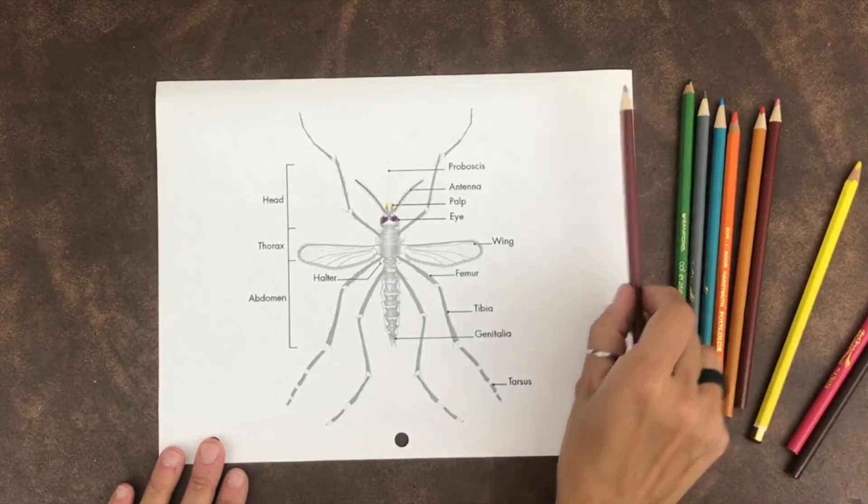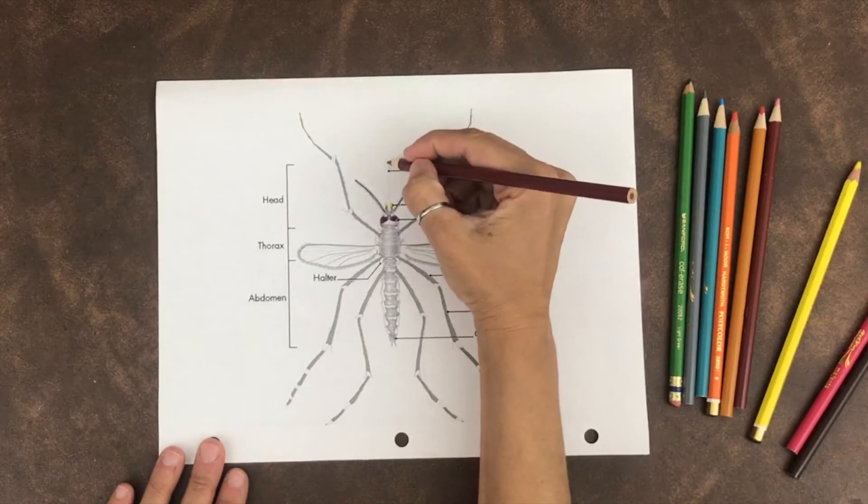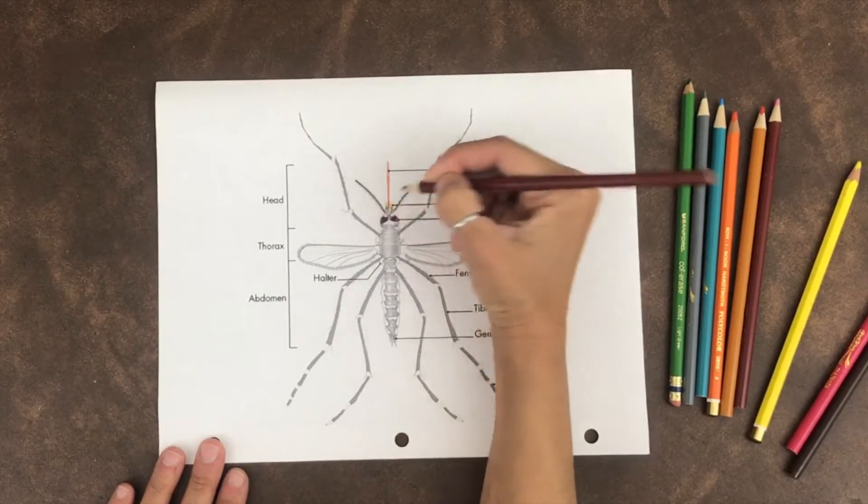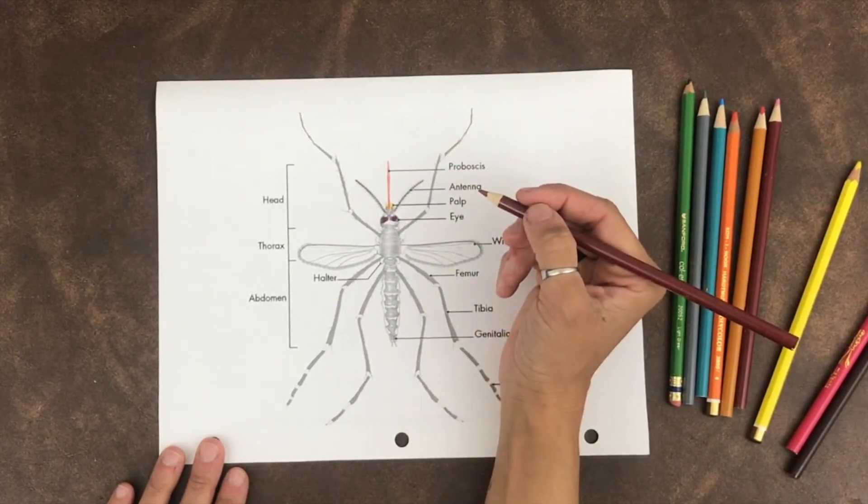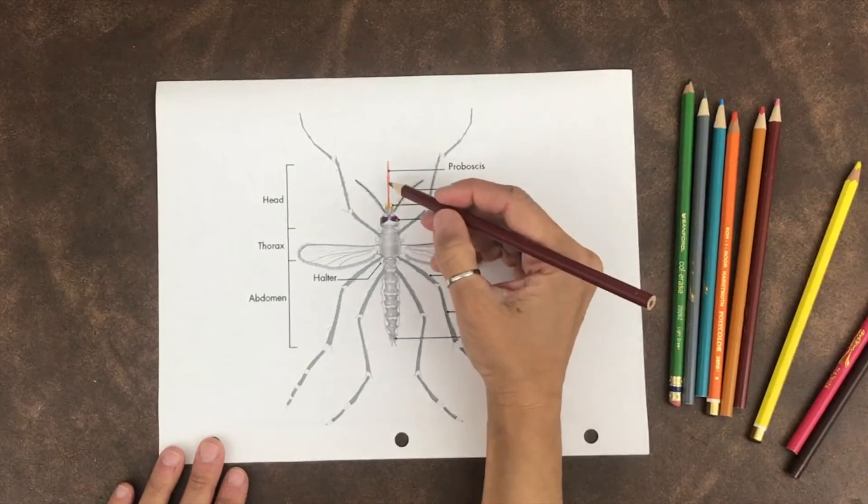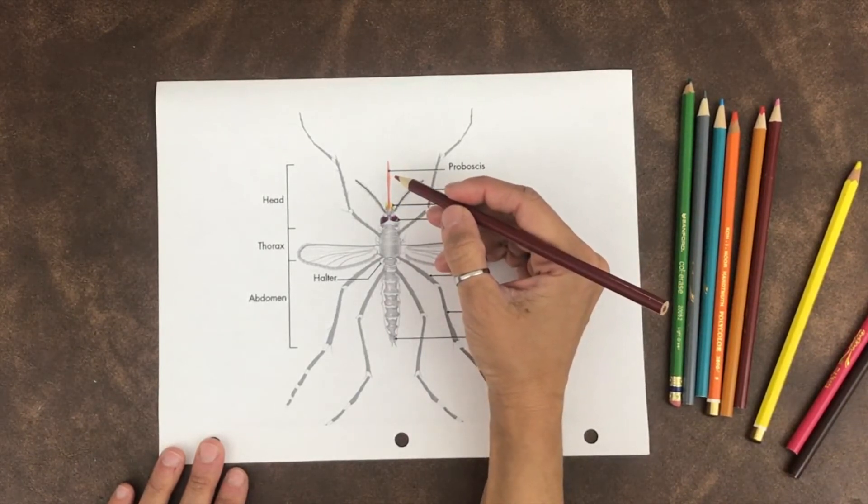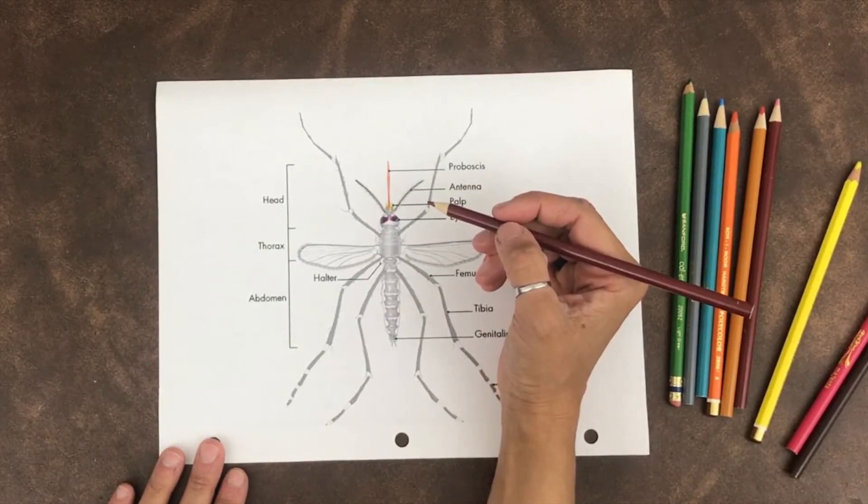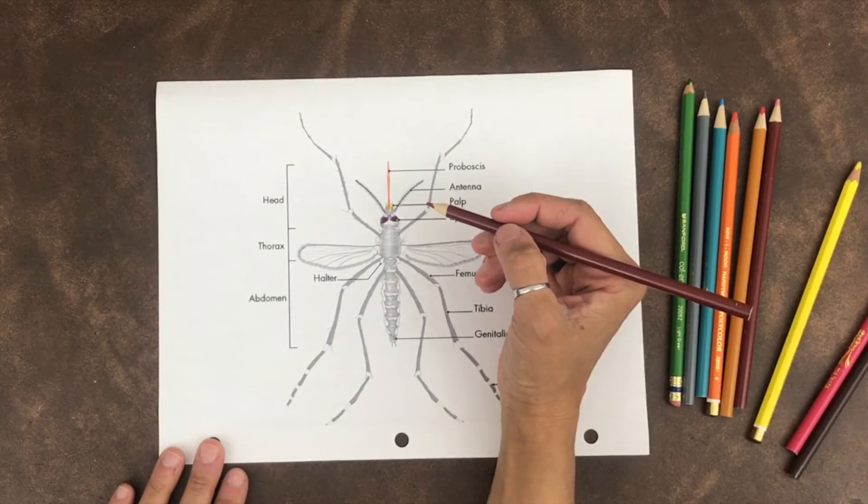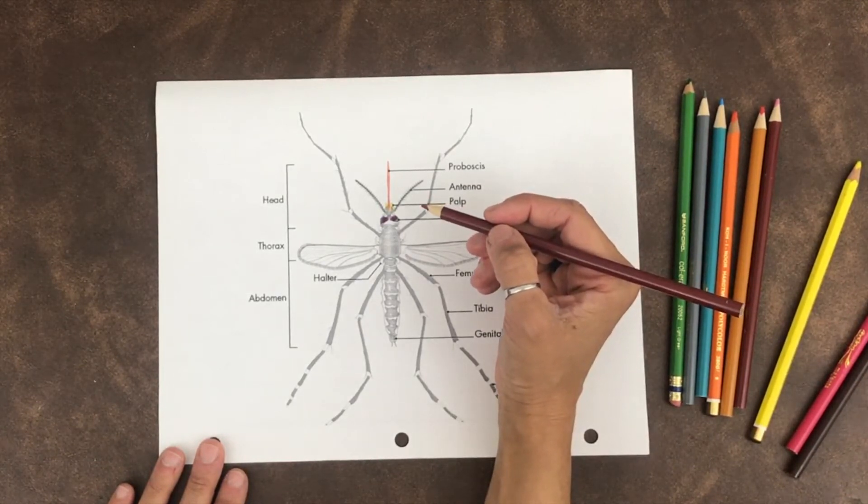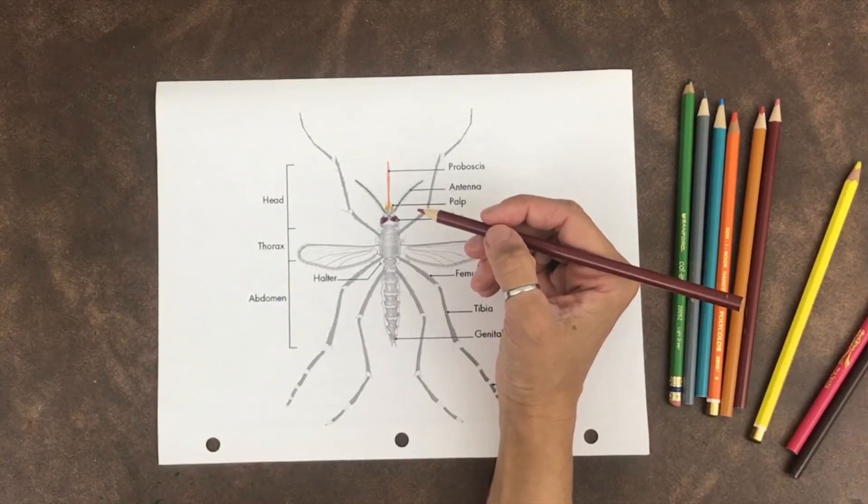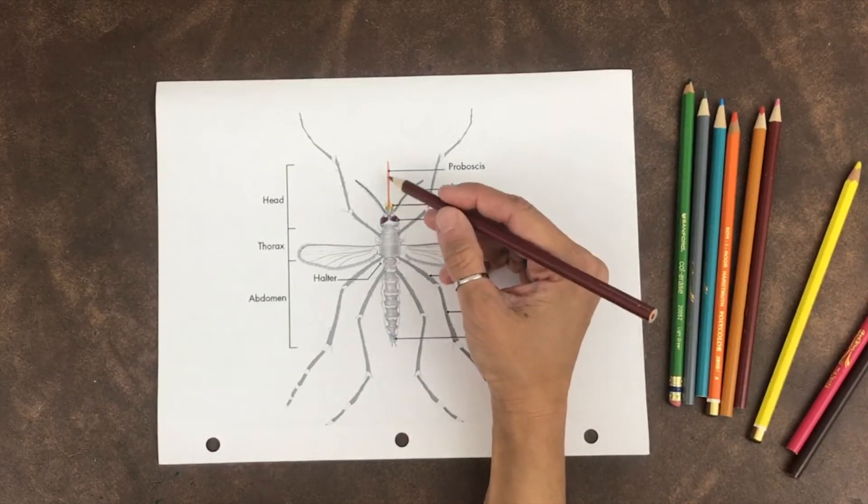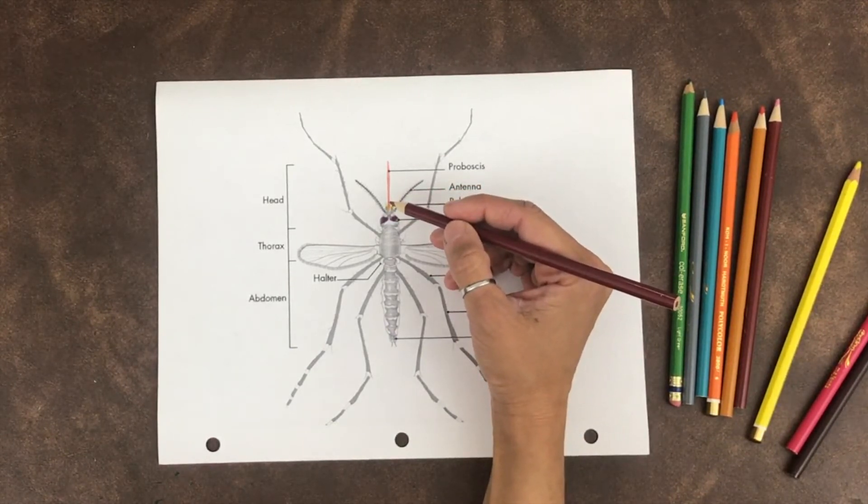Next is the proboscis, just like a butterfly. The female's proboscis pierces the skin of a person or animal and sucks out the blood. Remember, only females suck out blood. The male's proboscis is not strong enough to pierce the skin, and males do not drink blood. Both female and male mosquitoes use the proboscis to feed on flower nectar and fruit juices as well.